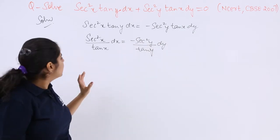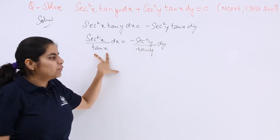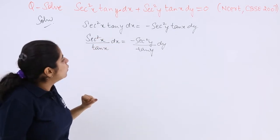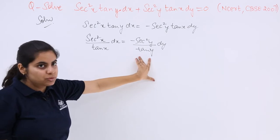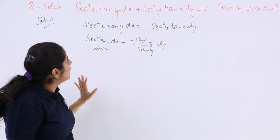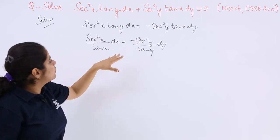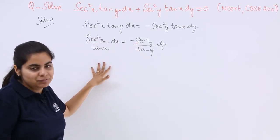Now see what has to be done? I know that if I put tan x = t, sec²x dx = dt. Also, if I put tan y = t, sec²y dy = dt. Now let me see the question again, whether we have done things correctly? Yes, we have done it.